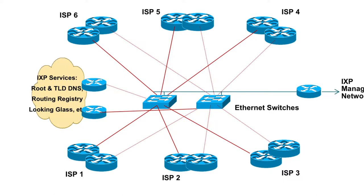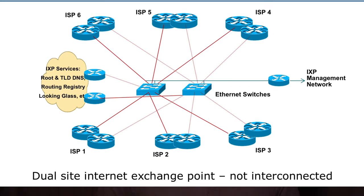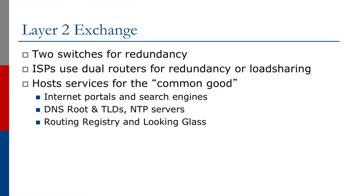We also have the exchange point management network where the network monitoring system and the exchange point website and so on would reside. As the exchange point grows, quite often the ISP members would like a second site for redundancy, so a second Ethernet switch is provisioned. Note that the switches are not interconnected — it's a true independent second site. We don't want the two exchanges joined together so that we have true redundancy should either site fail. ISPs will use dual routers for redundancy or load sharing.